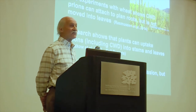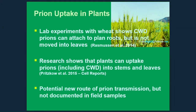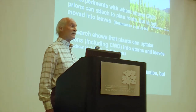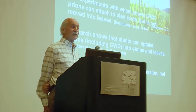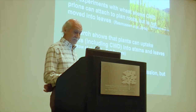Another area of long-term concern is prion uptake in plants, which has been documented in a couple of studies. One study in Canada found prions attached to roots but not getting up to leaves in terms of CWD. A more recent study showed they can actually get into the leaves and stems of plants as well. Conceptually, in the lab, we can get uptake of prions into plants, which could then be consumed by cervids or other species — another potential route for cross-species problems. However, nobody has yet documented this in a field setting.